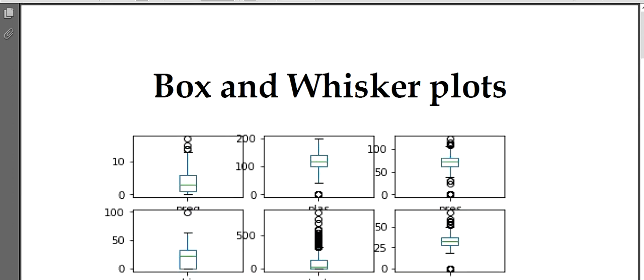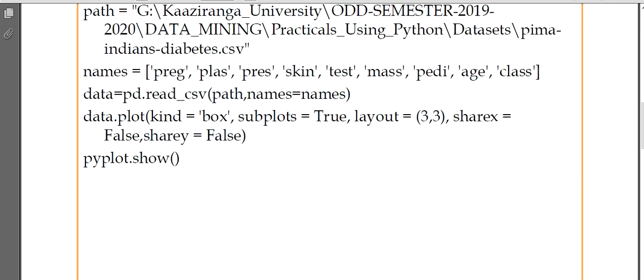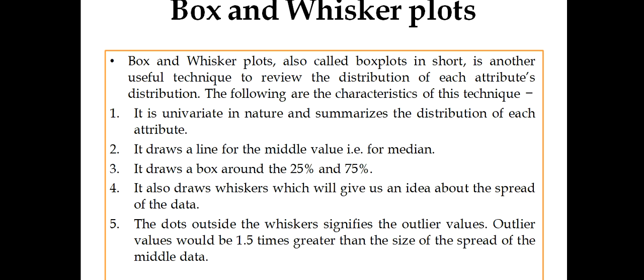Box and whisker plots, also known as box plots in short, is another useful technique to review the distribution of each attribute's distribution. This attribute's distribution means how the values with respect to that attributes are distributed. As you know in the last class I described that like skewed, whether skewed or normal. That can be observed for box plot analysis.